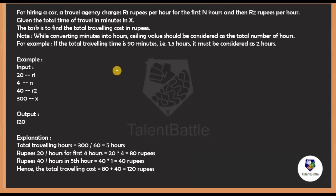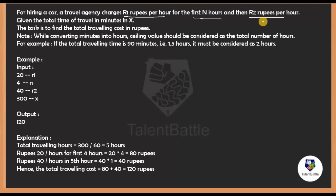For hiring a car, a travel agency is going to charge r1 rupees per hour for the first n hours, and then r2 rupees per hour after that. For example, if the total travel duration is 10 hours, for the first n hours they will charge r1 rupees, and after that r2 rupees. The total time of travel in minutes is provided as x, r1 is the rate for the first n hours, and r2 is the rate after n hours — four input conditions.